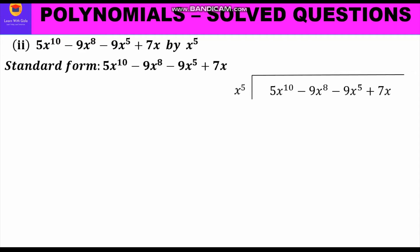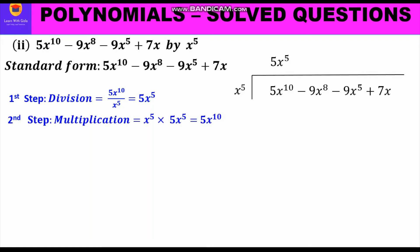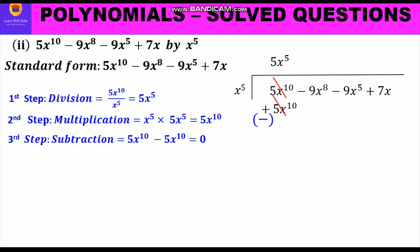We start with the first step, division: 5x¹⁰ divided by x⁵ gives 5x⁵, which becomes our quotient. Second step, multiplication: x⁵ times 5x⁵ gives 5x¹⁰, written below 5x¹⁰ in the dividend. Third step, subtraction: we put a minus sign and subtract — one is plus, one is minus, both cancel and we get 0.